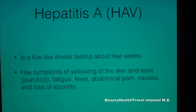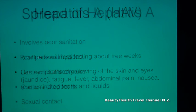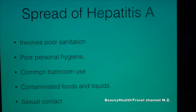Hepatitis A is a flu-like illness lasting about 3 weeks, with symptoms of yellowing of the skin and eyes (jaundice), fatigue, fever, abdominal pain, nausea, and loss of appetite. Spread of Hepatitis A involves poor sanitation, poor personal hygiene, common bathroom use, contaminated foods and liquids, and sexual contact.